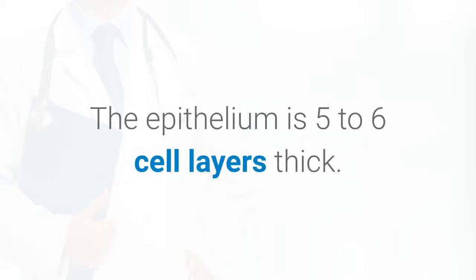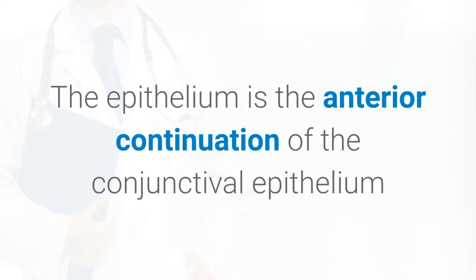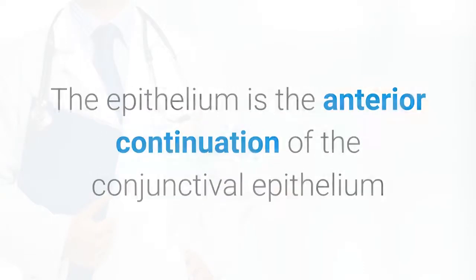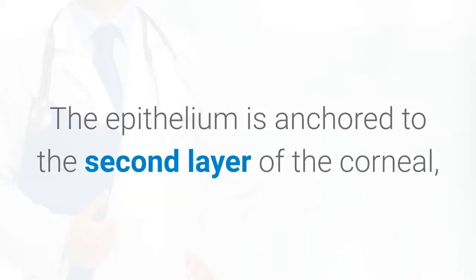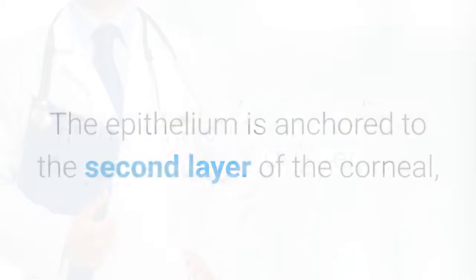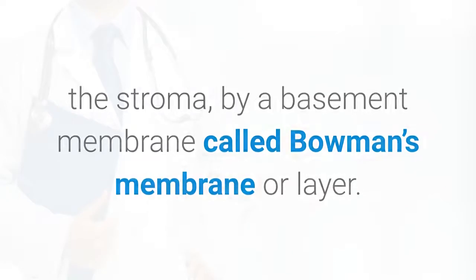The epithelium is 5-6 cell layers thick. It is the anterior continuation of the conjunctival epithelium, which is actually a continuation of the epidermis of the skin. The epithelium is anchored to the second layer of the cornea, the stroma, by a basement membrane called Bowman's membrane or layer.